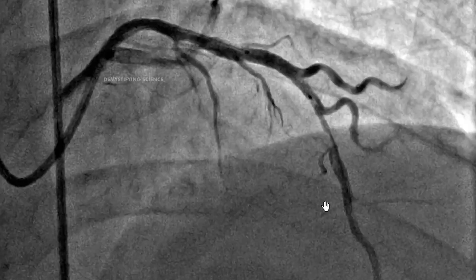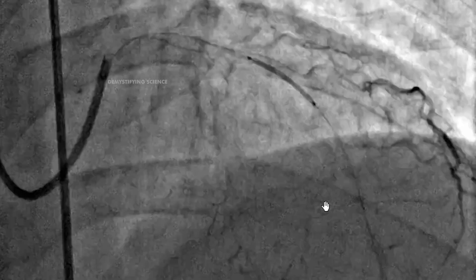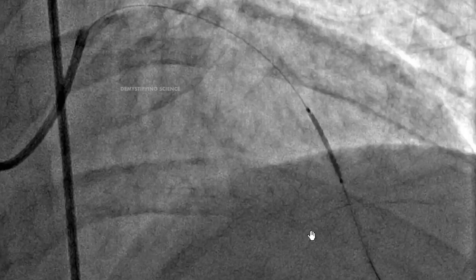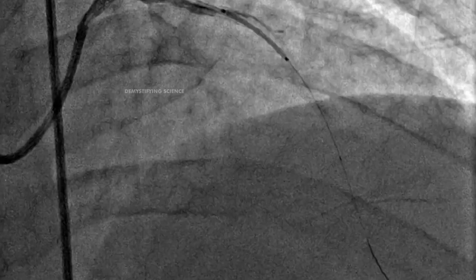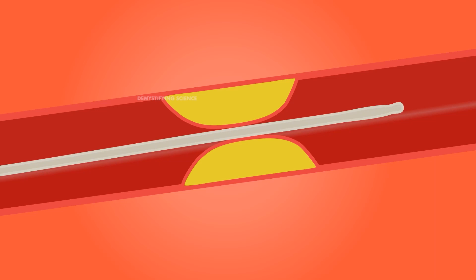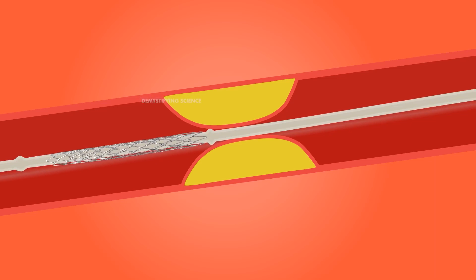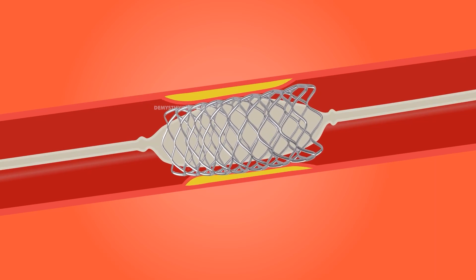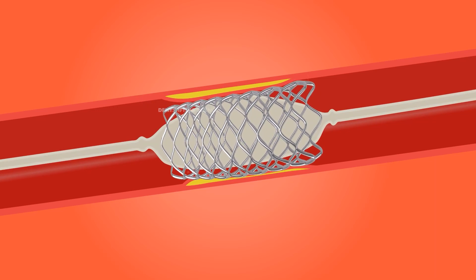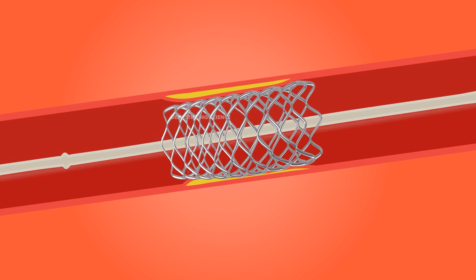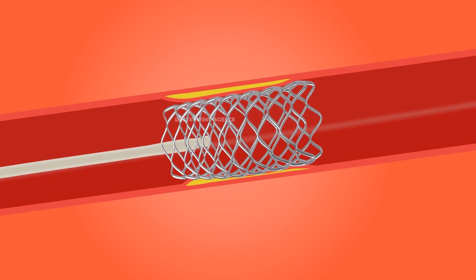More x-ray images called angiograms are taken to see how well blood flows through your newly widened artery. Most stents implanted during an angioplasty are drug-coated. The medication in the stent is slowly released to help prevent future plaque buildup and the re-narrowing of the blood vessel.